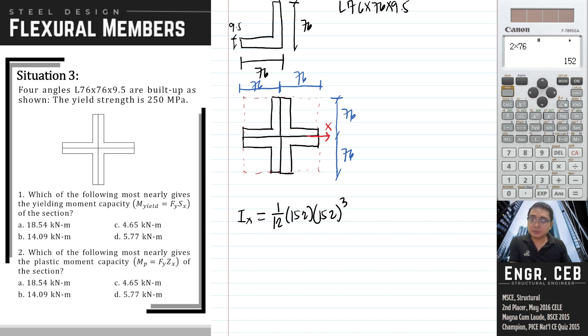We will subtract the moment of inertia of these holes, so minus 1 over 12. The dimension of the hole will be 76 minus 9.5, that is 66.5. So we have 1 over 12, 66.5h cubed. Take note the centroid of this hole does not coincide with the x-axis of the built-up section. Therefore we need to apply the transfer formula for moment of inertia.